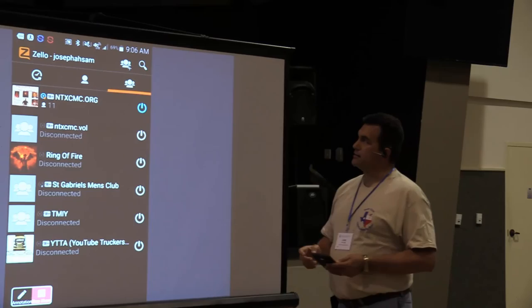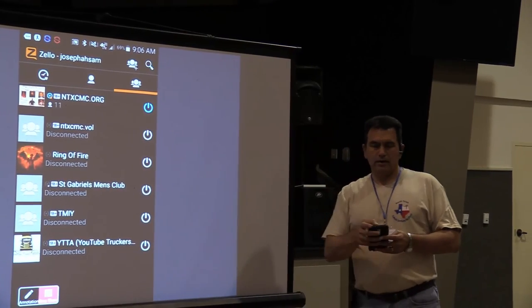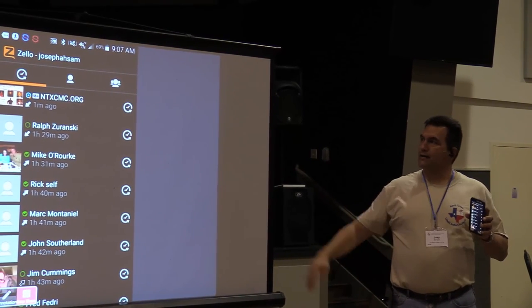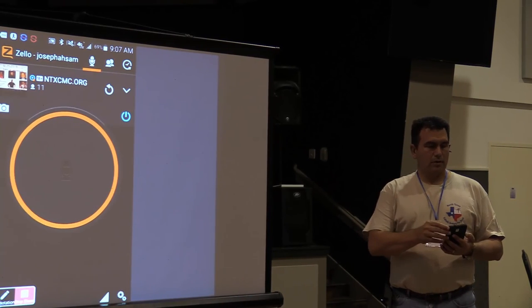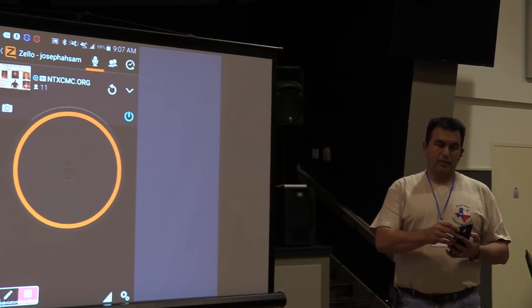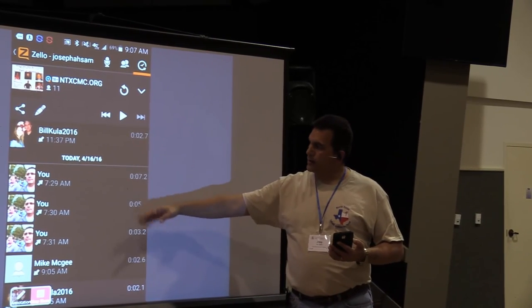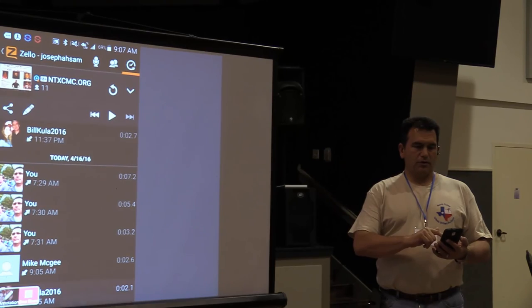Another really neat thing about this is this little clock with a backwards arrow on it. This shows all the conversations that we've had in these different groups. For example, if I go to ntxcmc.org. By the way, on Apple, that is an I. So let me click this little symbol up here in the top right again. Here are conversations that happen right from this channel. If I scroll through here, if I tap on one of those, you can actually re-listen to the conversations in that group or between you and another person.